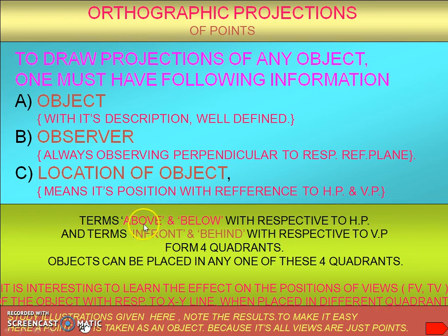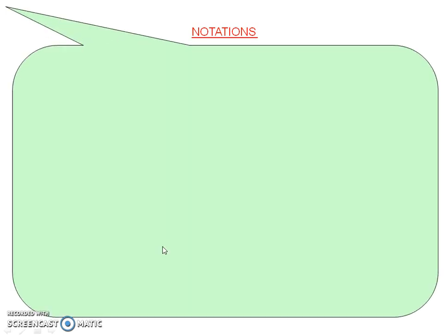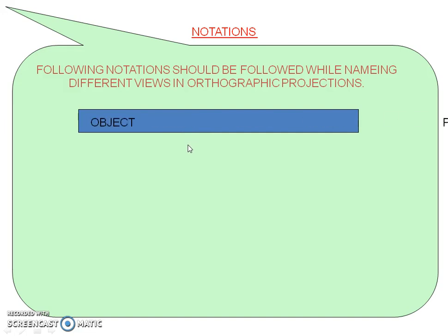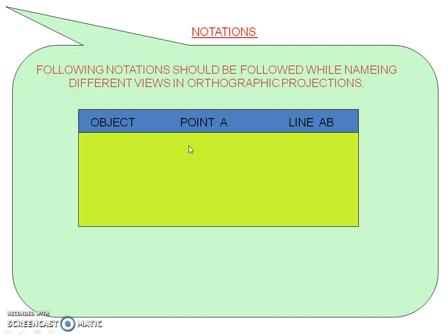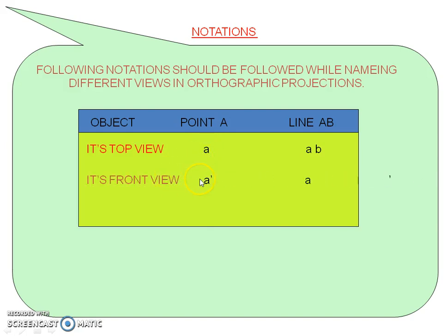When we are considering HP, we say above HP or below HP. When considering VP, we can say in front of or behind VP. Now, the common notations used in orthographic projections: if the object is the point A — capital letter — we should represent the top view as small 'a', the front view as 'a dash', and the side view as 'a double dash'.